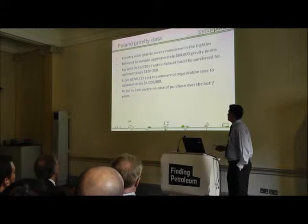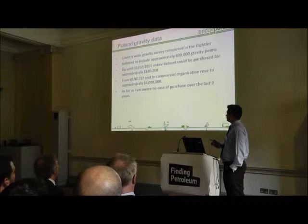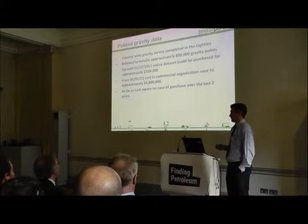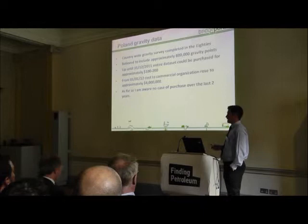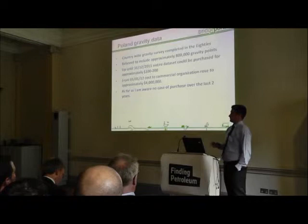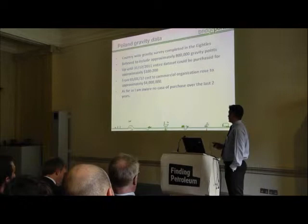I want to quickly mention Poland. There is an equivalent dataset in Poland that was completed in the 1980s, believed to have approximately 800,000 gravity stations — so it's a very comprehensive dataset. Now, up to a couple of years ago that entire dataset could be purchased for one or two hundred dollars. Then from the 1st of January 2012, that rose horrendously to over four million dollars. I've used that dataset in the past and it's a very good dataset, but I can't recommend something for four million dollars. If you have access to it in Poland, I would strongly recommend you look at it.